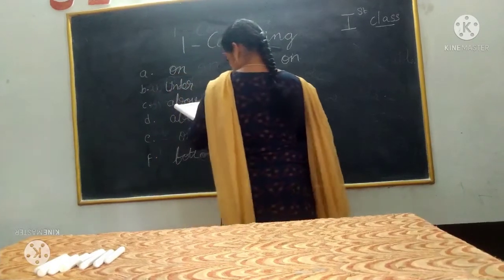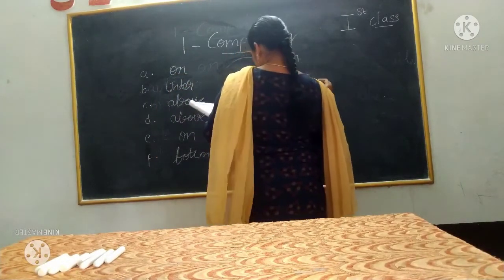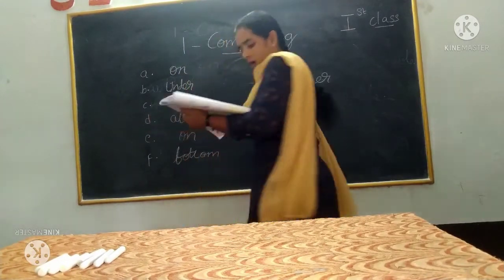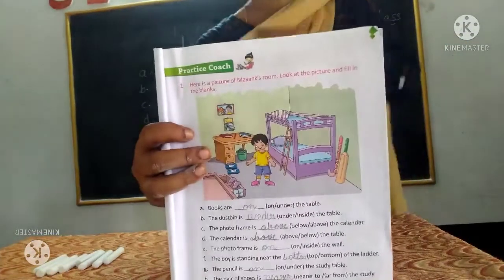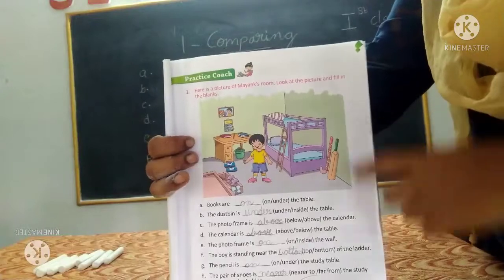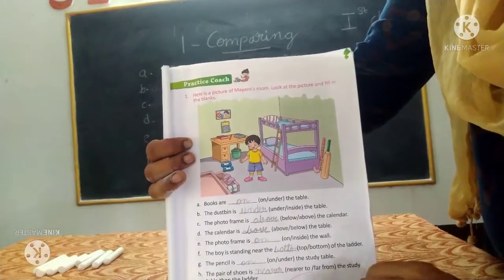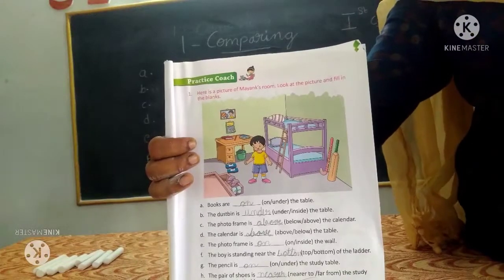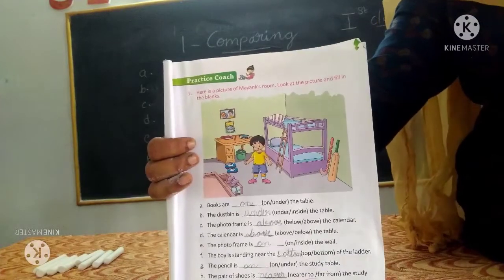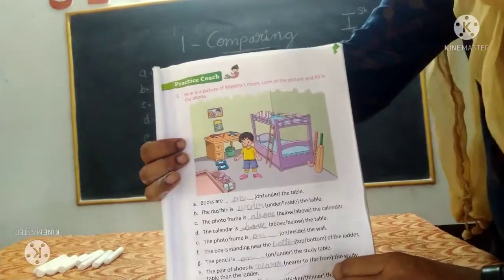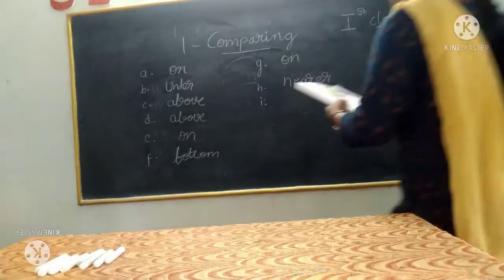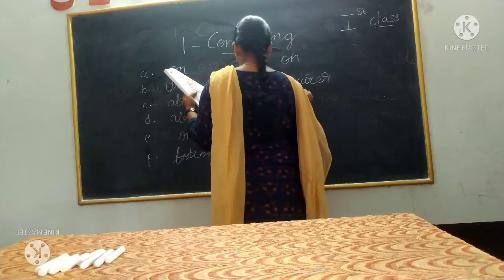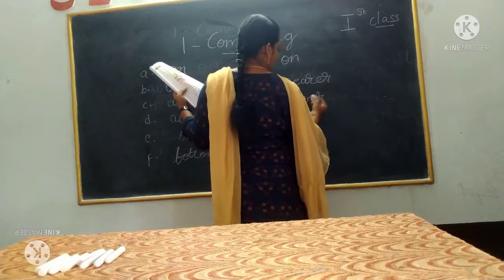Answer H is nearer — nearer to the study table. I: the hockey stick is — dash — than the cricket bat. Thicker or thinner? The hockey stick is thinner than the cricket bat. T-H-I-N-N-E-R, thinner than the cricket bat.